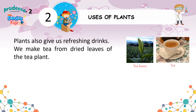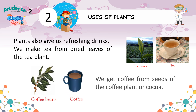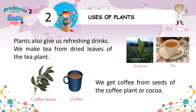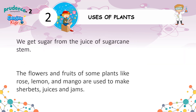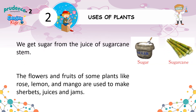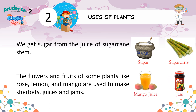Plants also give us refreshing drinks. We make tea from dried leaves of the tea plant. We get coffee from seeds of the coffee plant or cocoa. We get sugar from the juice of sugarcane stem. The flowers and fruits of some plants like rose, lemon, and mango are used to make sherbets, juices, and jams.